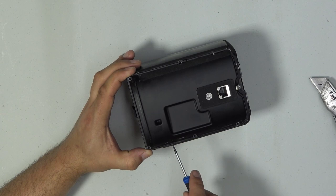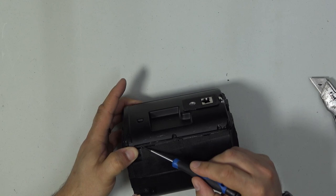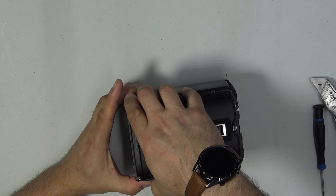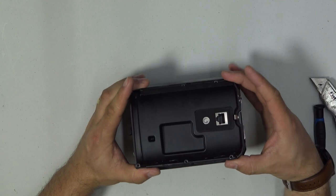Once you've got all those screws out, get a little flat blade screwdriver and very carefully push against the rubber seal. You'll hear a little hiss of air and indeed that back chassis will come off. Don't pull too hard because there's a few connectors in here.